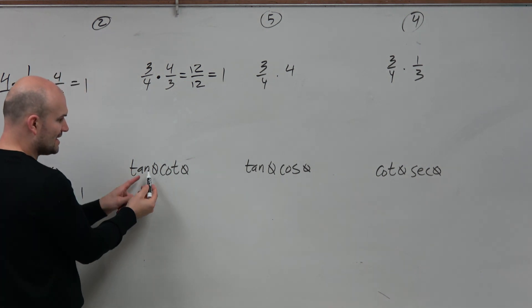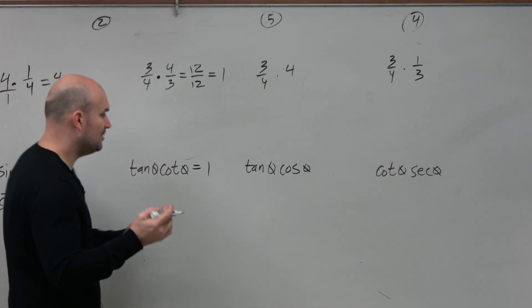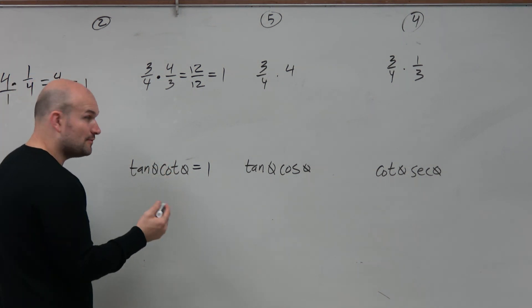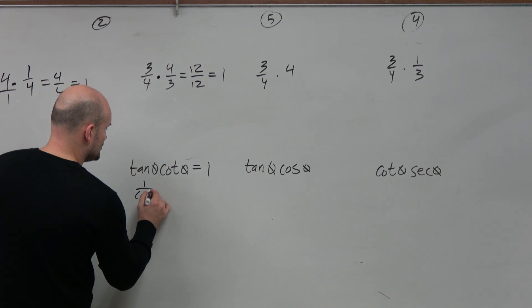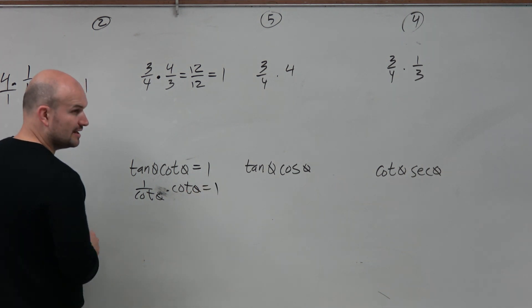And again, so here we recognize a function multiplied by its reciprocal. We know the answer is 1. But I just want to show you, there's multiple different ways you could do this. You could do 1 over cotangent theta. You could use the reciprocal identity for tangent, and you get 1.